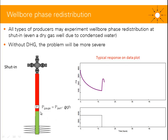If the gas-liquid interface stabilizes below the gauge or even past the gauge, then the density below the gauge is going to be constant. So this hydrostatic term is going to be constant, and now the pressure of the gauge will again be a direct measurement of the pressure of the perforation. We will end up with a true PBU response.